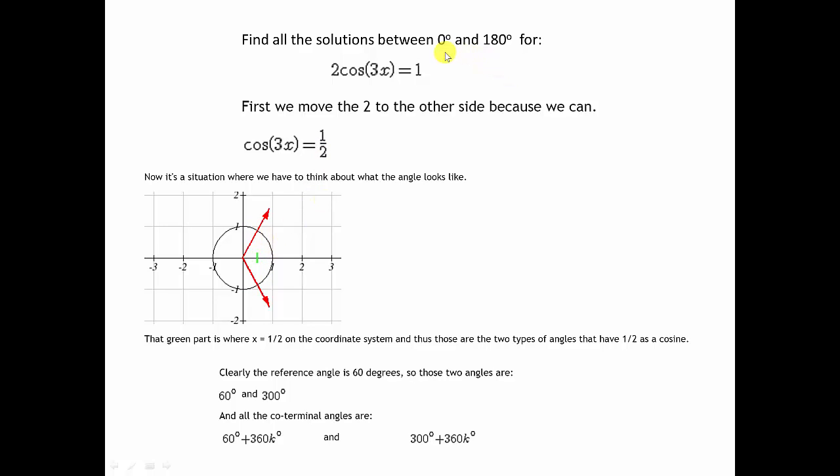And since we're looking between 0 and 180, we're looking for positive angles. We're going to go ahead and label these as 60 degrees and 300 degrees.